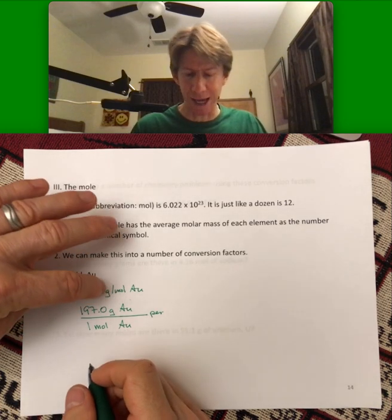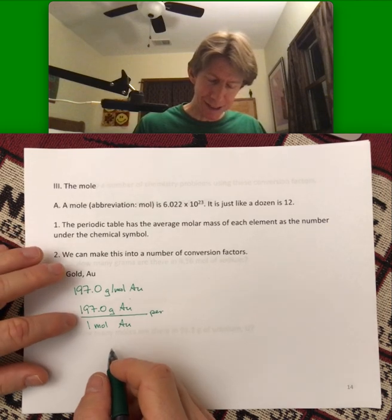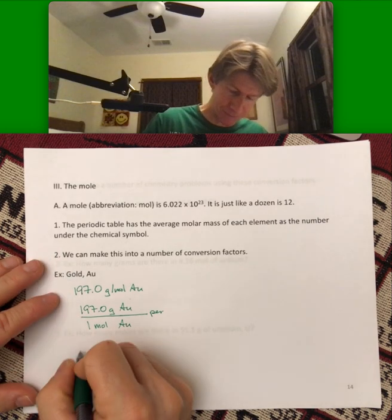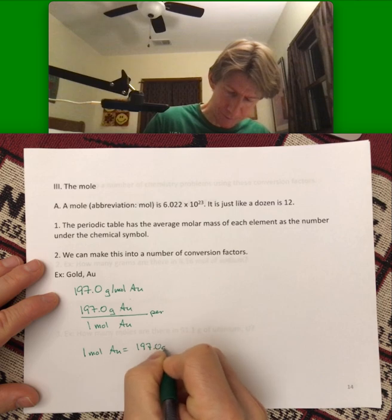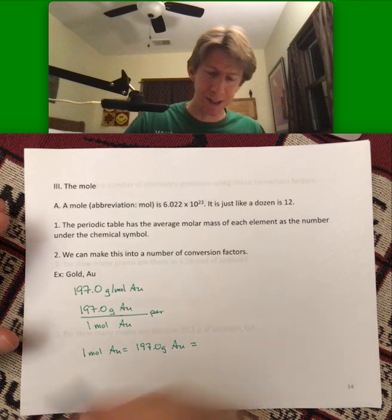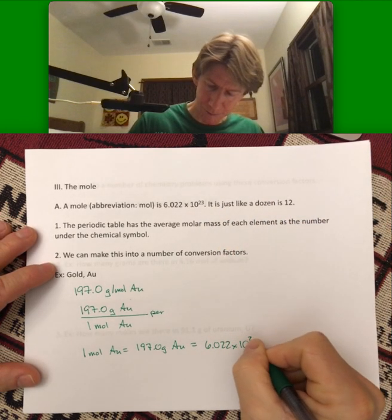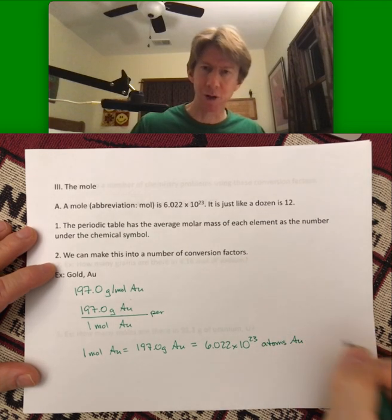That's just basically stacking up the molar mass part. What it says is that one mole of gold is equal to 197.0 grams. And I think this is new.